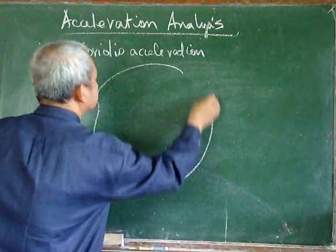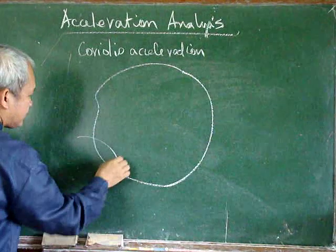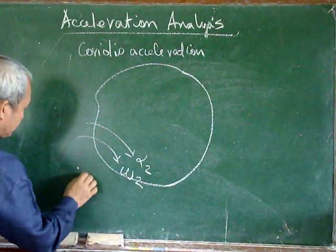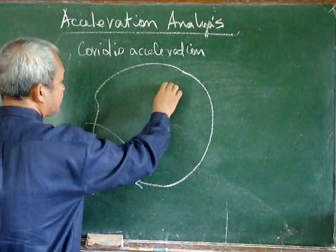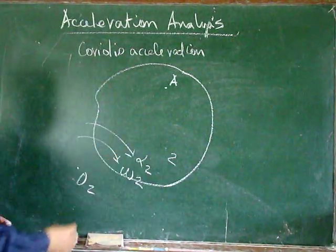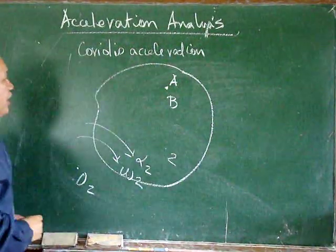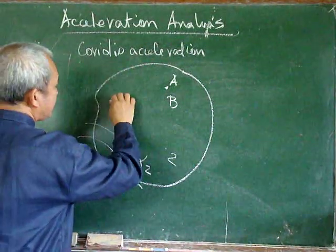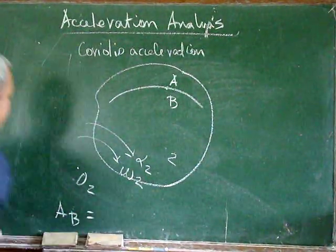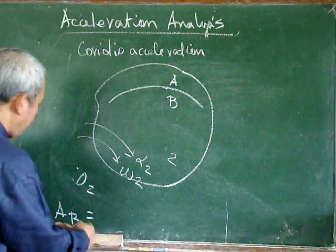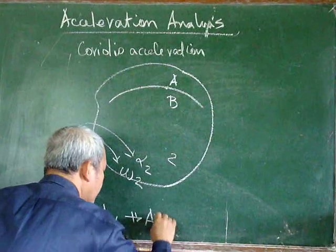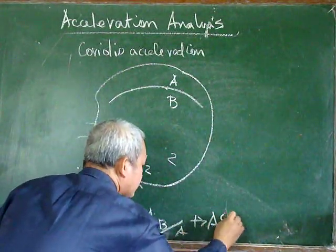Let's take a body which is moving with a certain angular velocity and angular acceleration, with point O2 at a fixed location. We can consider point A on body 2. If there is a certain point B coincident with point A, and point B is moving along a path in body 2, then the acceleration of point B equals the acceleration of A, plus the acceleration of B with respect to A, plus the Coriolis component of acceleration.